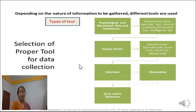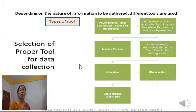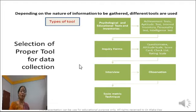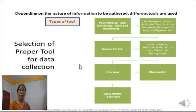To draw the same example — suppose I have to cut pieces of cloth. Here, I have to select the proper tool, which will be the scissor. Only with the help of the scissor can I properly cut the pieces of cloth, not the knife. Similarly, in research, we have to select the proper tool for data collection.